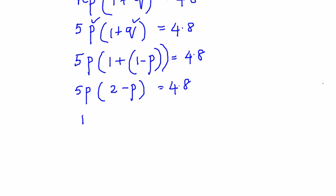You get 10p - 5p² = 4.8. So if I'm going to write it as a quadratic equation, it would be 5p² - 10p + 4.8 = 0.